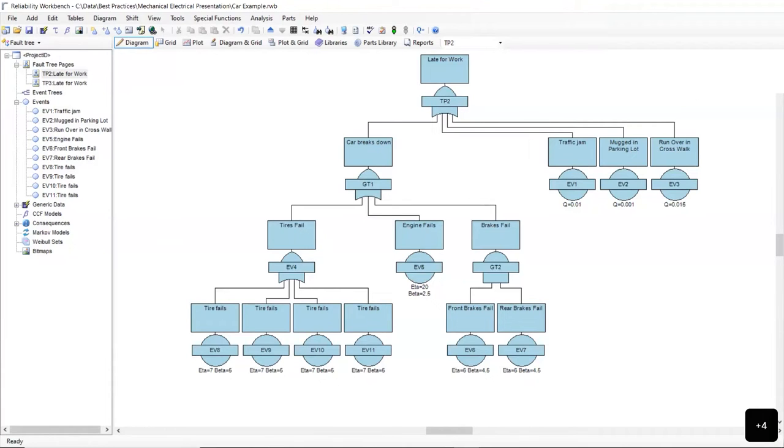I was going to do it two different ways, but I didn't want to take the time for y'all to watch me type these things in. But this fault tree is, the top event is this has nothing to do with dam gates, but it's kind of a real world example. The top event is I'm late for work.